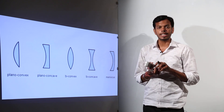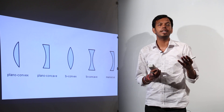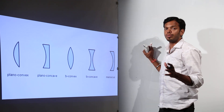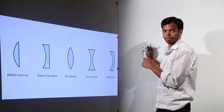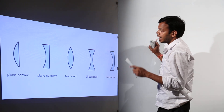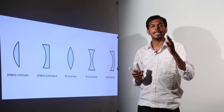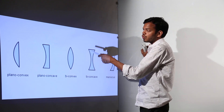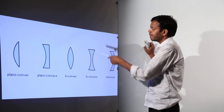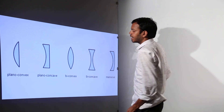These curved surfaces bounding the medium are not necessarily of equal radius of curvature. For example, I have given you a few shapes of various types of lenses frequently used in modern days. The first one is a plano-convex. As the name suggests, the first surface is convex and the second surface is plane, so it is called plano-convex. The second one is plano-concave because the second surface is plane and the first surface is concave.